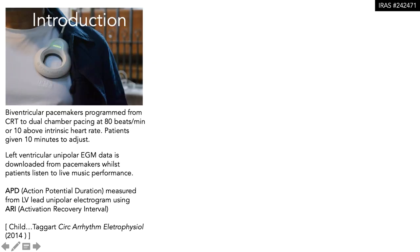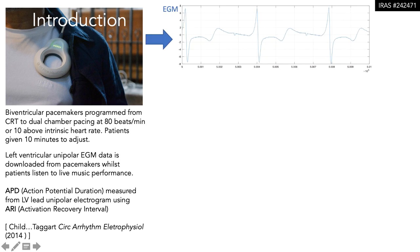The patients' biventricular pacemakers were first programmed from CRT to dual chamber pacing at 80 beats per minute or 10 above the intrinsic rate. Then, their left ventricular unipolar electrogram data is downloaded whilst they're listening to the music. The action potential duration, the APD, is measured using a well-validated surrogate, the activation recovery interval, the ARI.